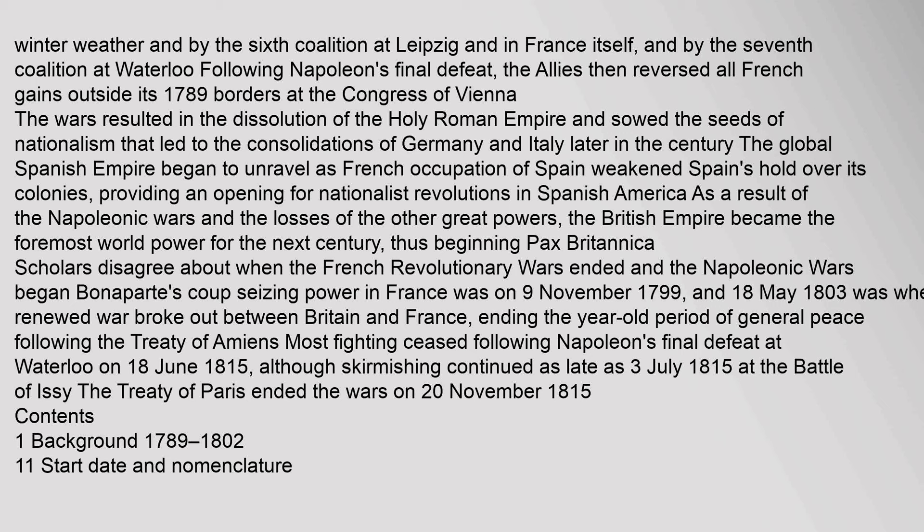These victories gave Napoleon's Grande Armée a sense of invulnerability, especially when it approached Moscow and occupied it after the Russians abandoned it. After the retreat from Russia, the French forces were defeated by Russian winter weather and by the 6th Coalition at Leipzig and in France itself, and by the 7th Coalition at Waterloo. Following Napoleon's final defeat, the Allies reversed all French gains outside its 1789 borders at the Congress of Vienna. The wars resulted in the dissolution of the Holy Roman Empire and sowed the seeds of nationalism that led to the consolidations of Germany and Italy.